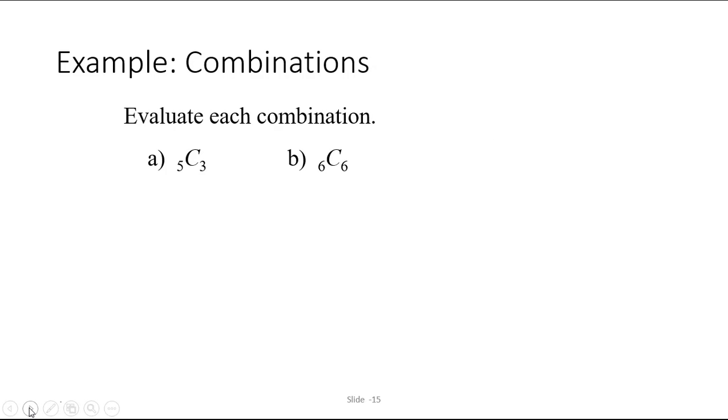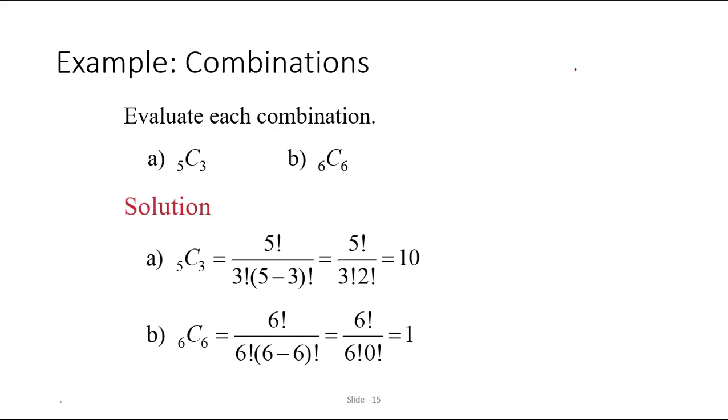So let's evaluate each combination using the formula. So 5C3, the formula is nCr equals n factorial over r factorial times n minus r factorial. So substituting 5 in for the n and 3 in for the r, we get 5 factorial over 3 factorial times 5 minus 3 factorial, which is 5 factorial over 3 factorial times 2 factorial. So you might wonder where they're getting this 10 from, but if you write it out 5 times 4 times 3 times 2 times 1 over 3 times 2 times 1 times 2 times 1, write out each of the factorials, you'll see that a lot of things cancel. 5 times 2 is 10. By the way, this will always turn out to be a whole number.